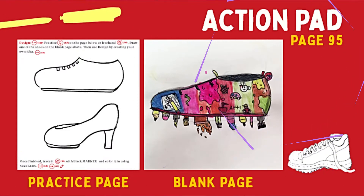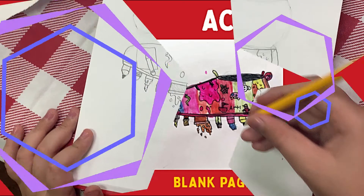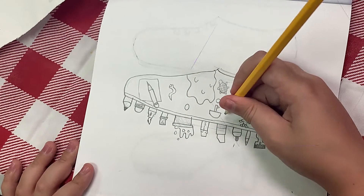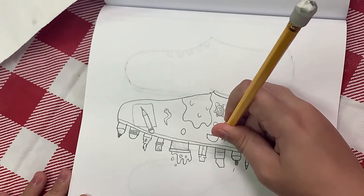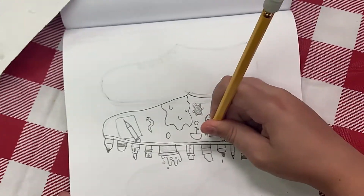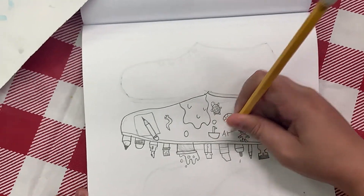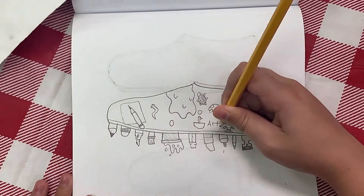It is time to go to our yellow action pad. Let's go to page 95. Let's practice using a soft pencil by drawing one of the shoes shown in the blank page of the yellow action pad. Then use the design by creating your own ideas.